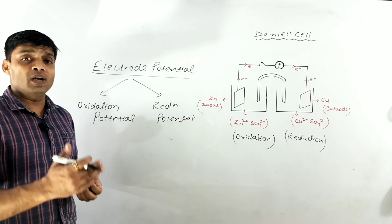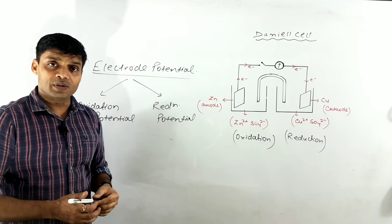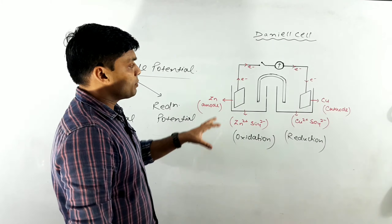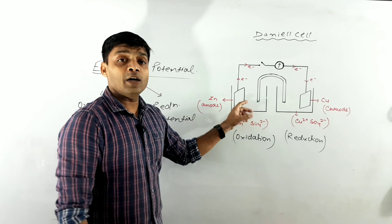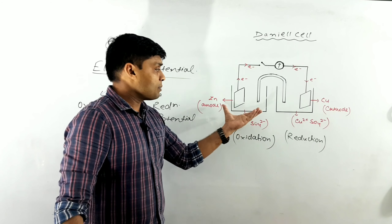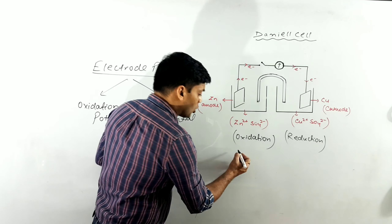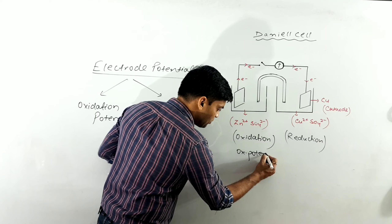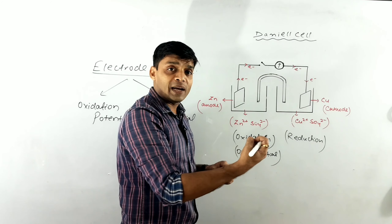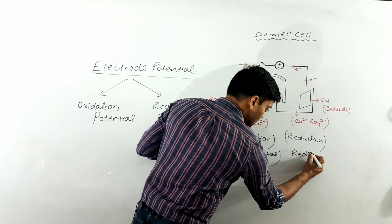Since electrode potential is the tendency to either lose or gain electrons, it is of two types. It can be classified as oxidation potential and reduction potential. If any electrode, upon contact with its ionic solution, exhibits the tendency to lose electrons, we say it shows oxidation potential. If it tends to gain electrons, we say it shows reduction potential. In the Daniel cell, the zinc half cell undergoes oxidation and exhibits oxidation potential, while the copper half cell undergoes reduction and exhibits reduction potential.